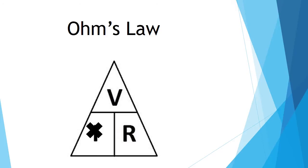If we're looking for current, we take voltage and divide it by resistance. And then lastly, if we're looking for resistance, we take voltage and divide it by current, and that gives us our resistance. And that's really the only thing we need to know to start working with electricity. It's simple, but there's a lot that we can do with that.